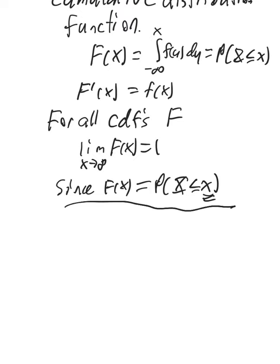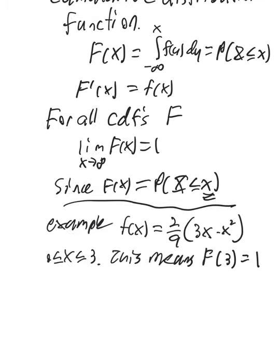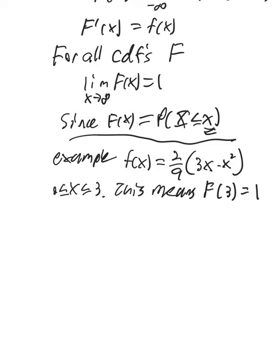So in our case, for example, if the little f of x is equal to 2 ninths times this 3x minus x squared, and that's for x between 0 and 3. One thing we can say for sure is you're not ever going to wait longer than 3 minutes. So this means we don't have to let x go to infinity. We know that f of 3 is going to be equal to 1. The probability that you will wait less than or equal to 3 minutes will be 1. So this will give us an easy way to find the capital F. All we do is integrate the little f, find an antiderivative.